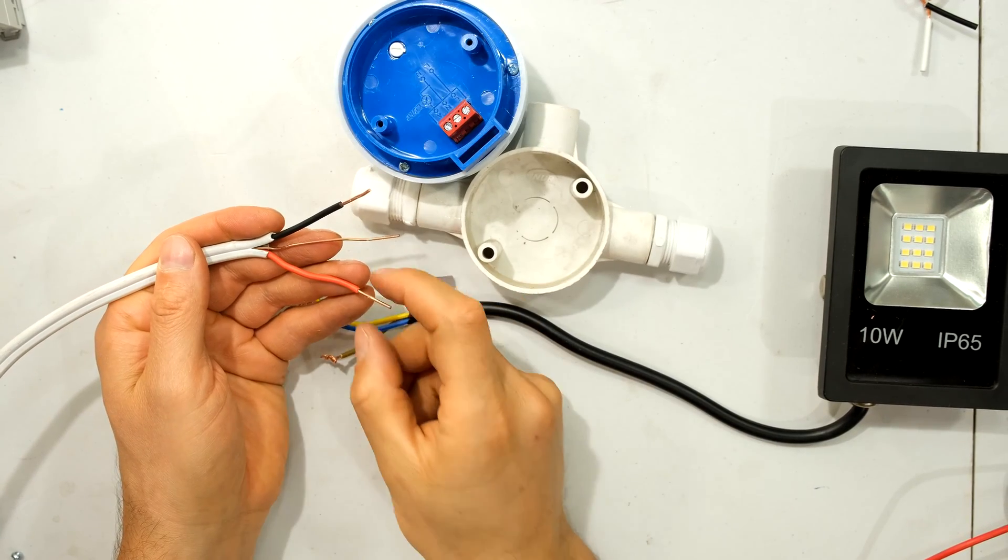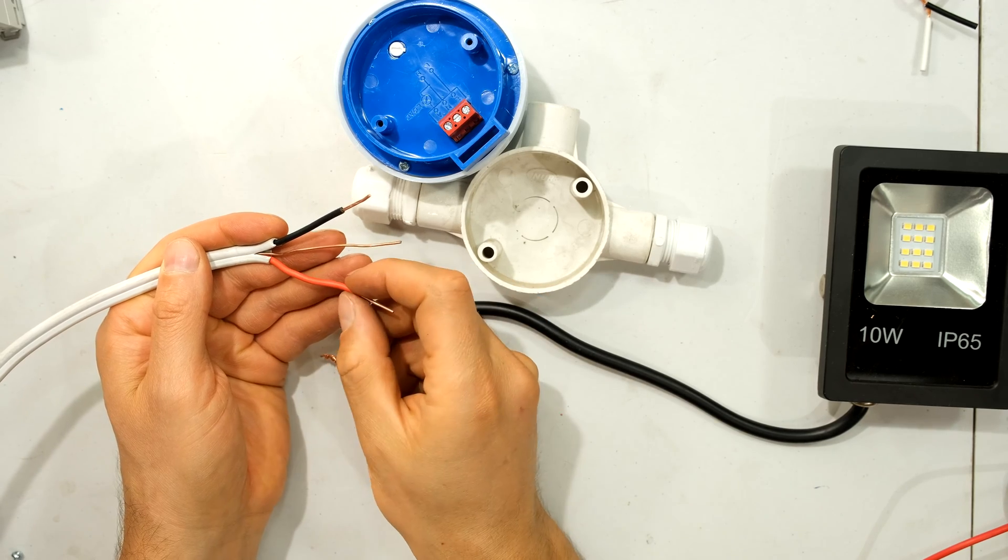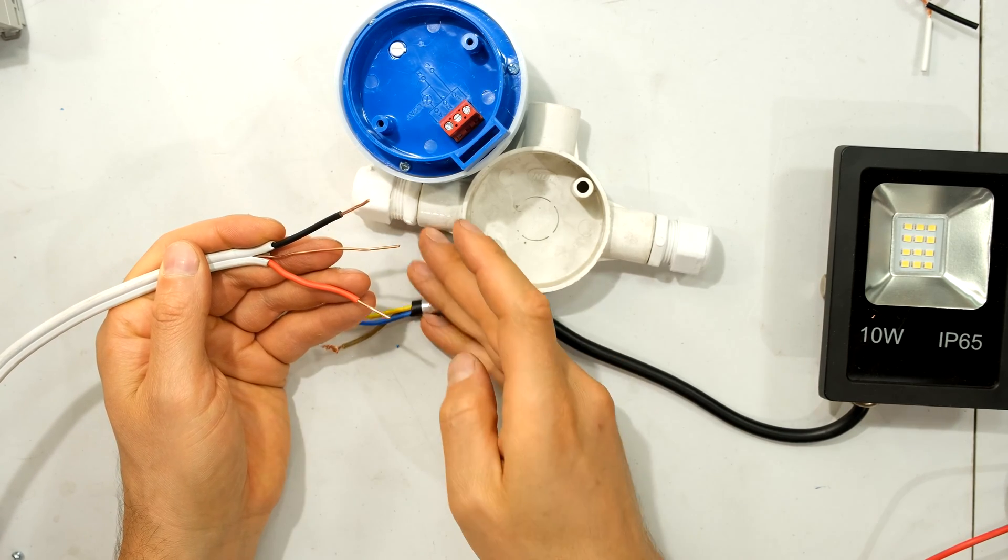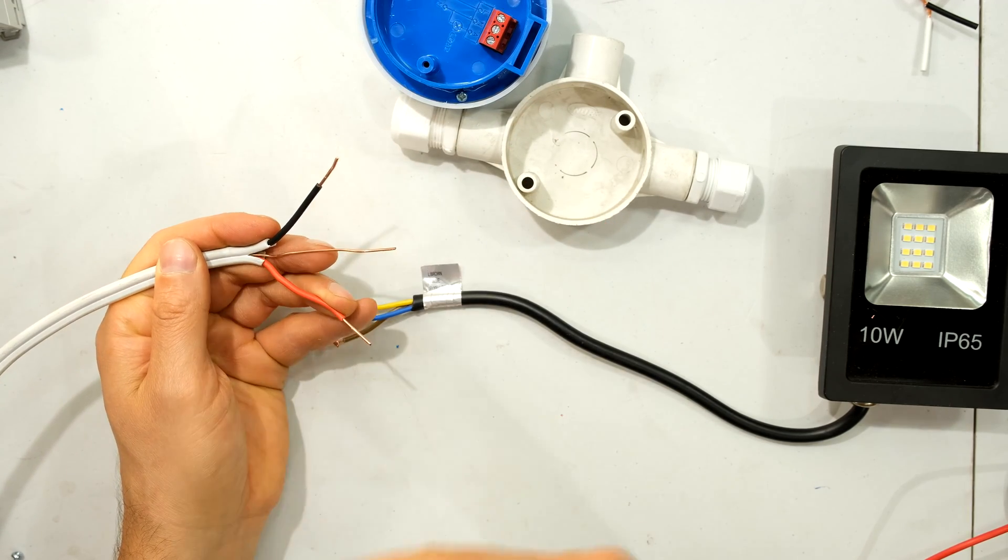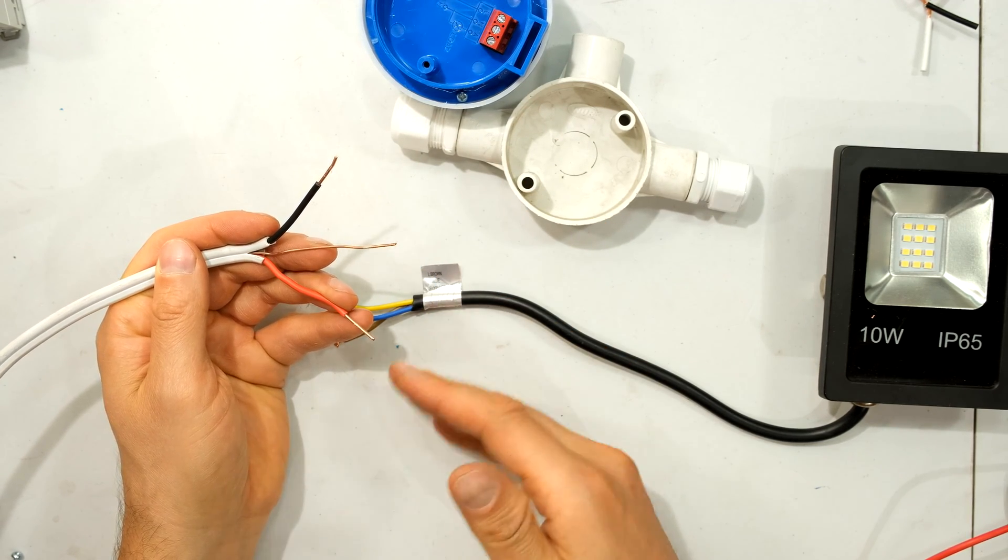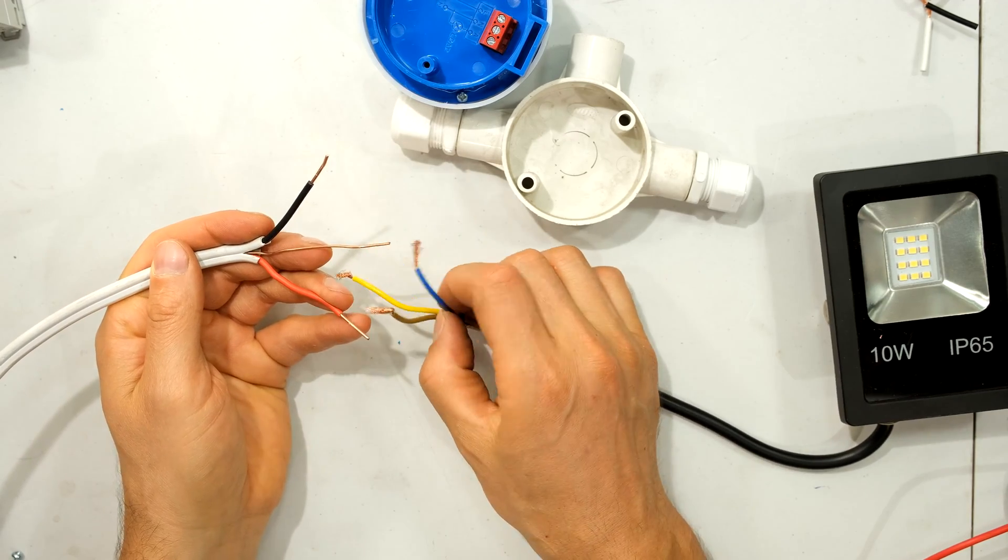The live is red in South Africa. So in your country, it might be a different color. For example, you might be using brown for the live. In this country, we use black to signify neutral. Follow the same principle in your country, although the wire colors may be different.